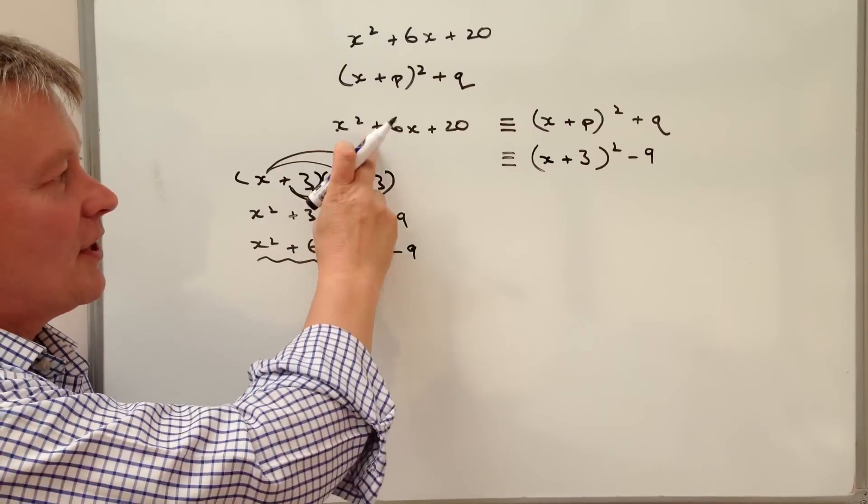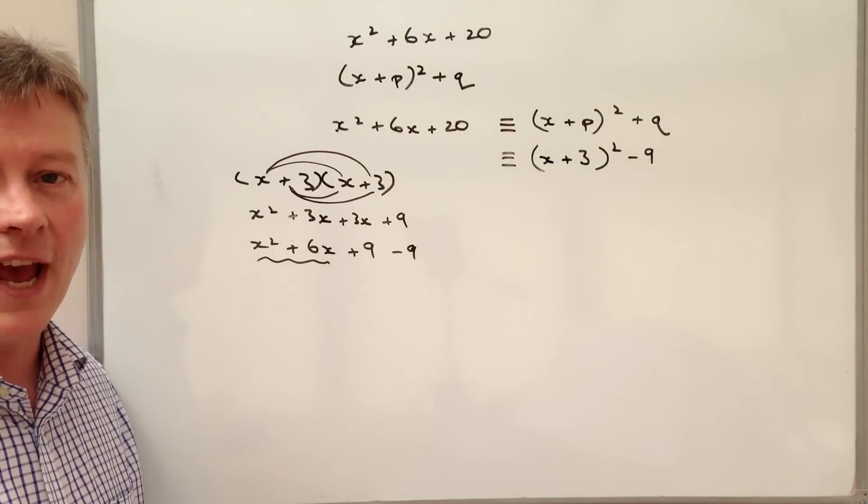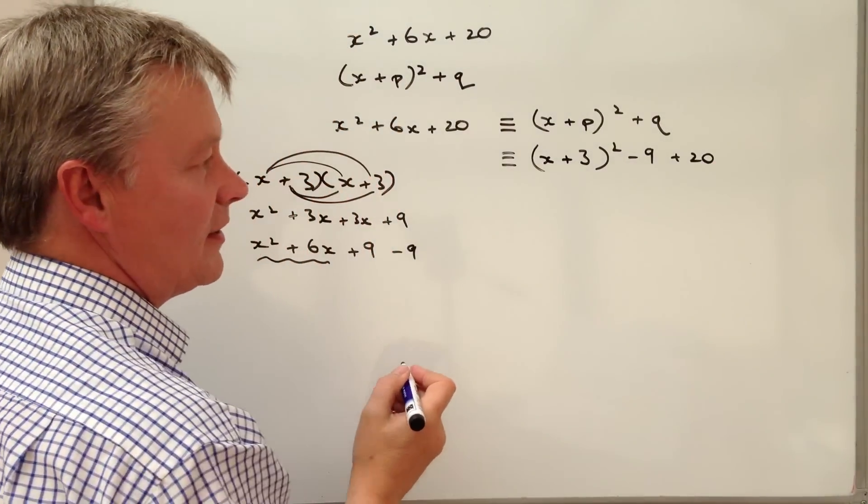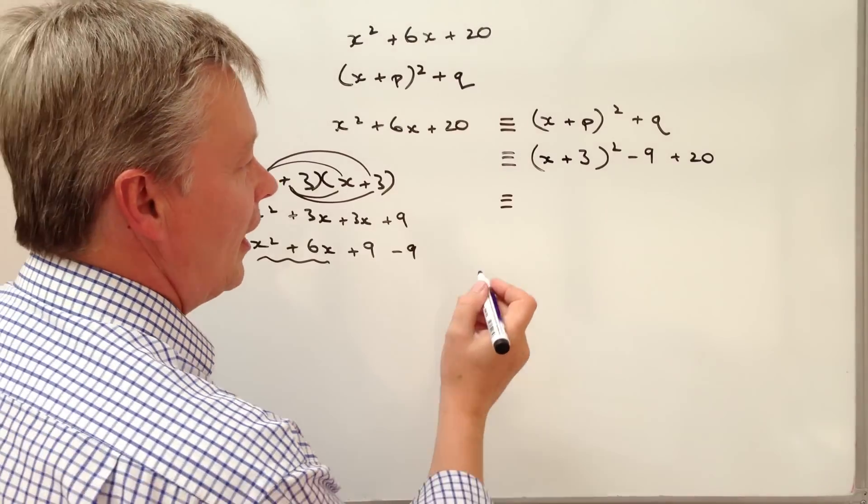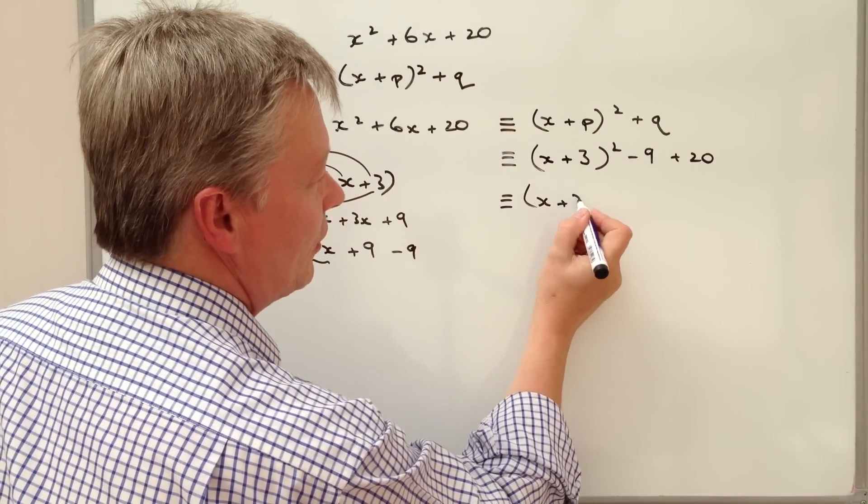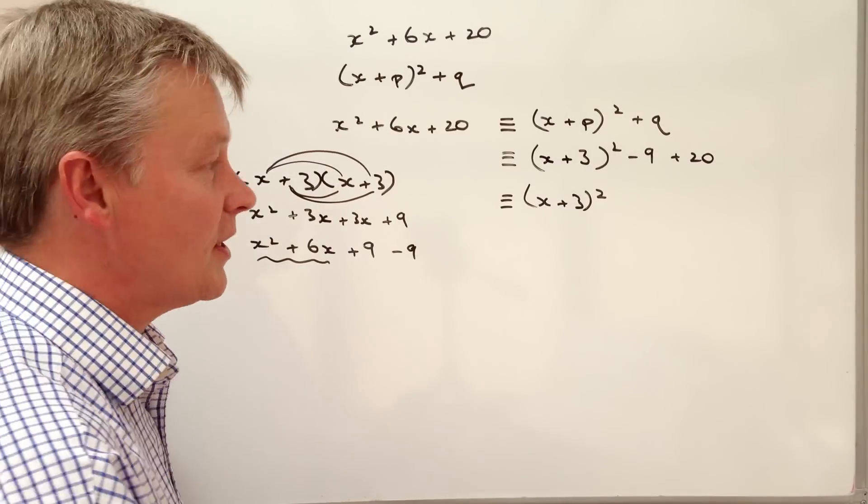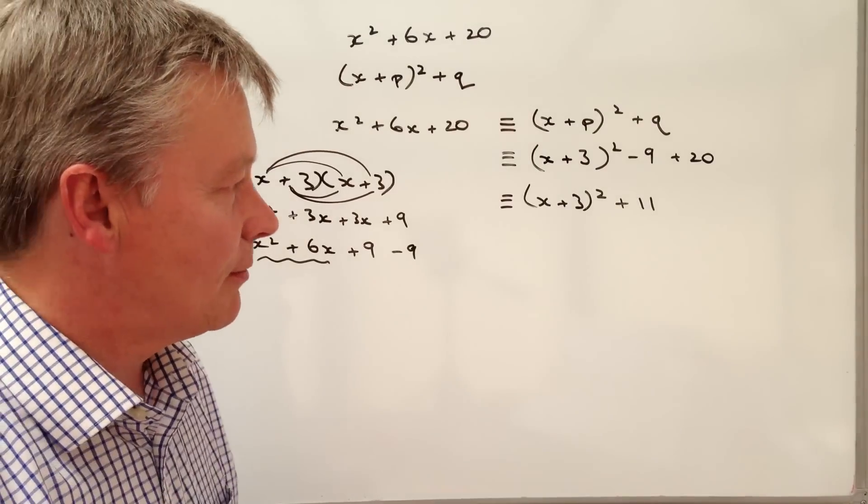So x squared plus 6x I can deal with. I now have the positive 20 to add to the end. So I add positive 20 to the end. So the equivalent is if I just tidy that up x plus 3 squared and I've got minus 9 plus 20 is positive 11. And that would answer my question.